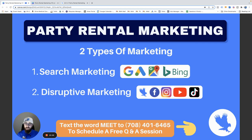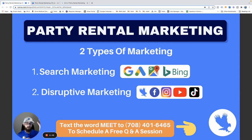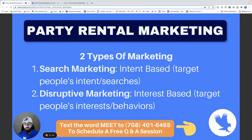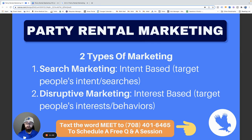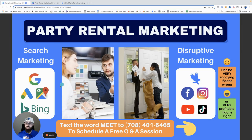Search marketing is like Google — people search 'bounce house rentals near me,' they're looking for your business. Disruptive marketing is like YouTube ads or Facebook ads — annoying, right? You're trying to watch a video and an ad disrupts you. Search marketing is intent-based — you target people's intent to purchase. Disruptive marketing is interest-based — you target people's interests or behaviors.